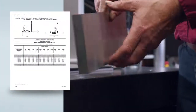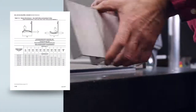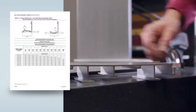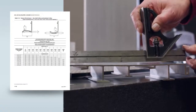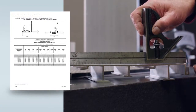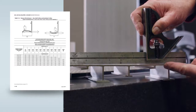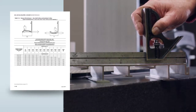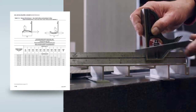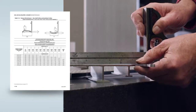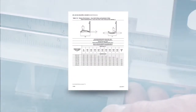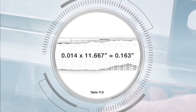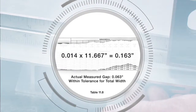Now that we know the allowable flatness tolerances, we can measure this profile's flatness across the full width. The tools commonly used are a straight edge and a feeler gauge. Start by laying a straight edge across the 11.667 inch surface. You can see a gap between the straight edge and the profile's surface. Insert a feeler or taper gauge into the gap to measure this distance. The gap measures 63 thousandths of an inch, which is within the allowable flatness tolerance of 163 thousandths of an inch for total width.